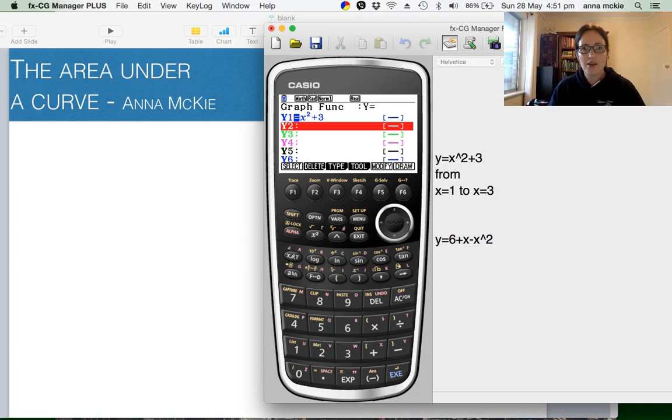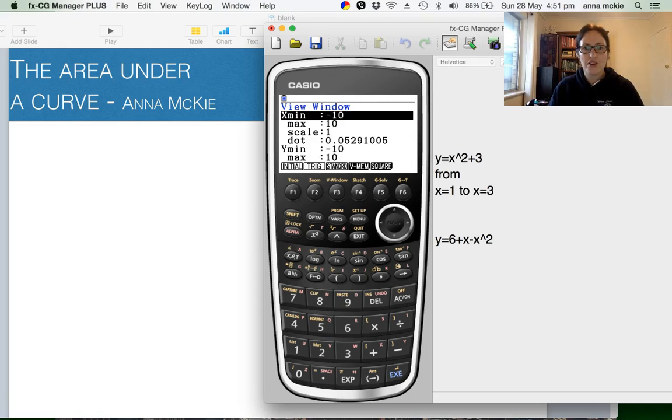Over here, the function is written off to the side, y = x² + 3 from x = 1 to 3. That will help determine what view window you're after. Just go into view window, a standard one to start with, but we're only interested in 1 to 3, so let's restrict our window a little bit.